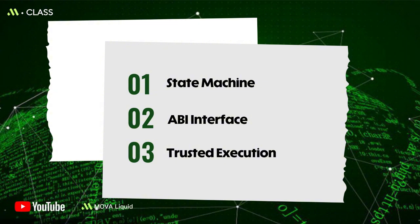Second, the ABI interface and event logs. The ABI defines how external callers invoke contract functions and pass parameters. Event logs record key actions into on-chain indexed data, making them easy for front ends and analytics tools to read.